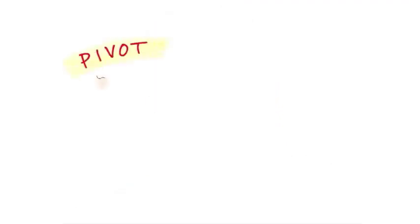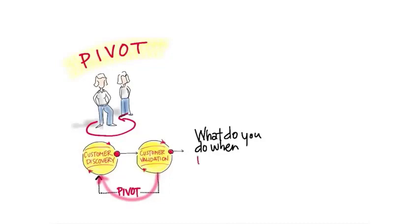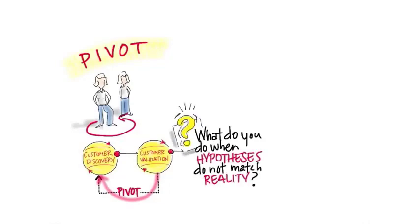One of the other interesting observations about customer development is this notion of the pivot. Pivot was a term that my best student ever, Eric Ries, coined when he noticed the arrow between customer invalidation and customer discovery, and he actually gave it a name, which I think is incredibly accurate. A pivot says, what do you do when your hypotheses don't meet reality? And this is such a neat observation about startups and why what we now know is much different than before. What we now know, instead of firing executives when our business model doesn't match what's going on outside in the real world, we fire the model.